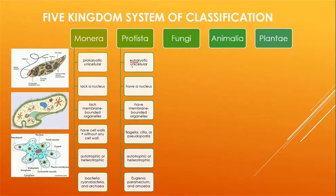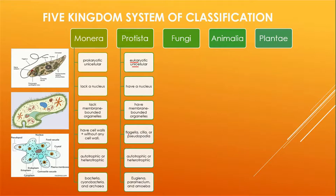Eukaryotic means they have a nucleus, but they are unicellular. Protists are considered the simplest form of eukaryotes, and eukaryotes are thought to have evolved from these simple protists. They have a nucleus and membrane-bounded organelles such as Golgi apparatus, endoplasmic reticulum, lysosomes, and vacuoles. They are autotrophic or heterotrophic, and they use flagella, cilia, and pseudopodia for movement.